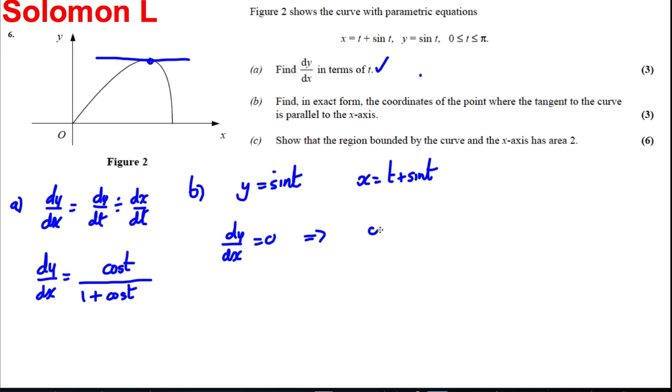And that implies we're solving cos t over 1 plus cos t is equal to 0. Multiplying both sides by 1 plus cos t, we're solving cos t equals 0. And therefore, t, if we're thinking where cos is 0, the cos graph looks as follows. And in between 0 and pi, which is in between these two points here, it's 0 at pi by 2. So t must be pi by 2.